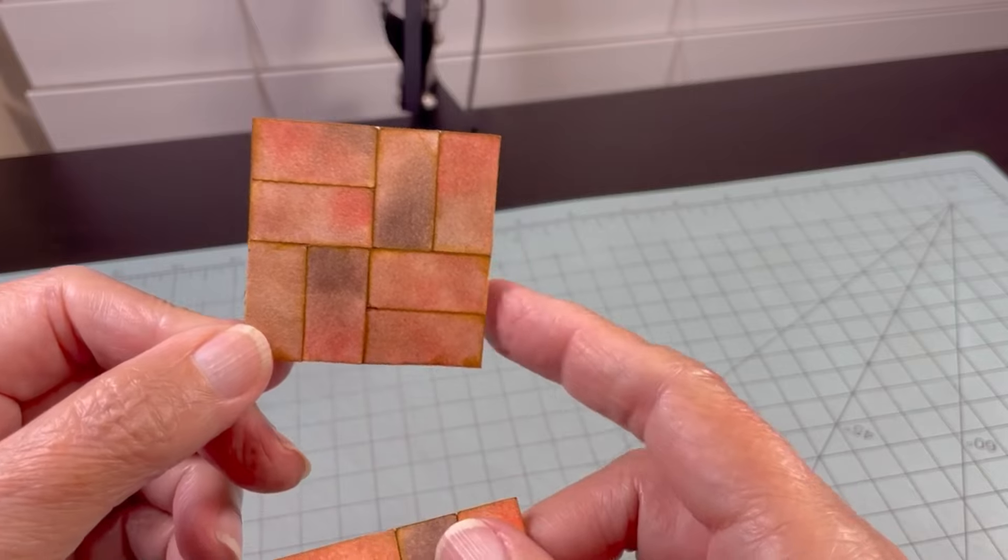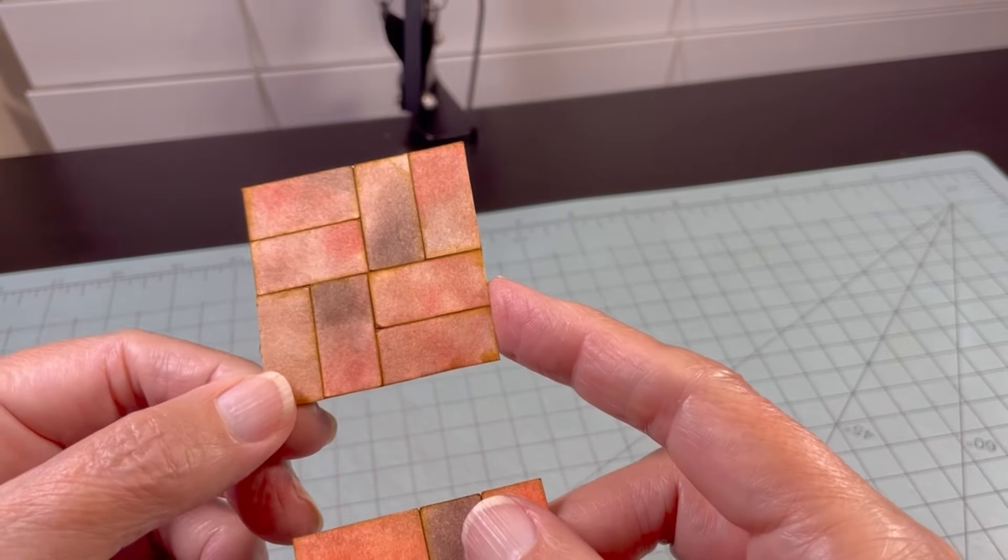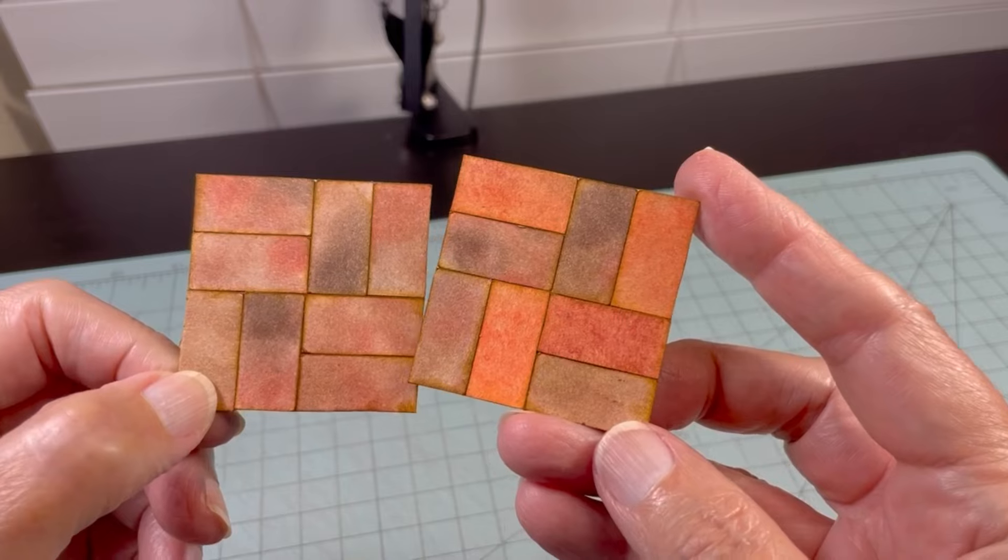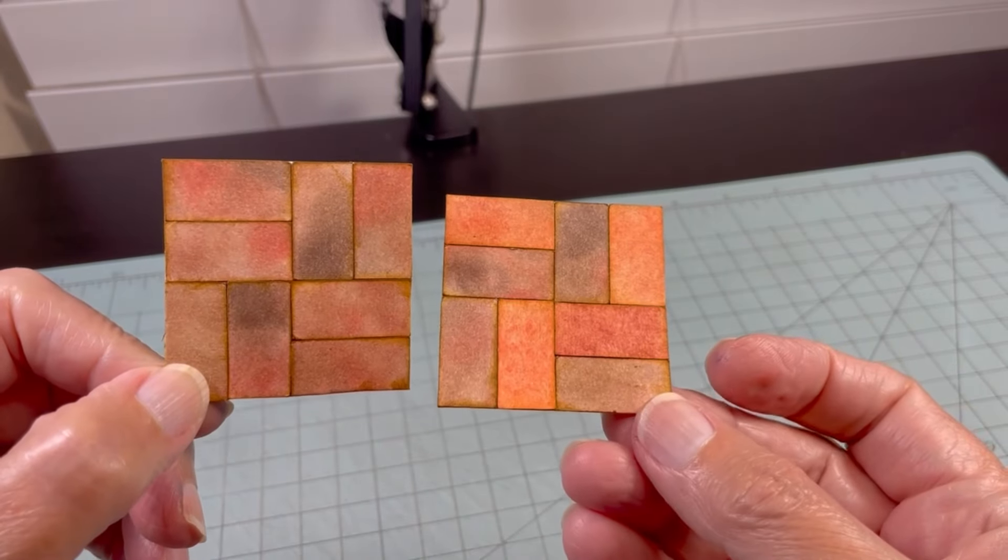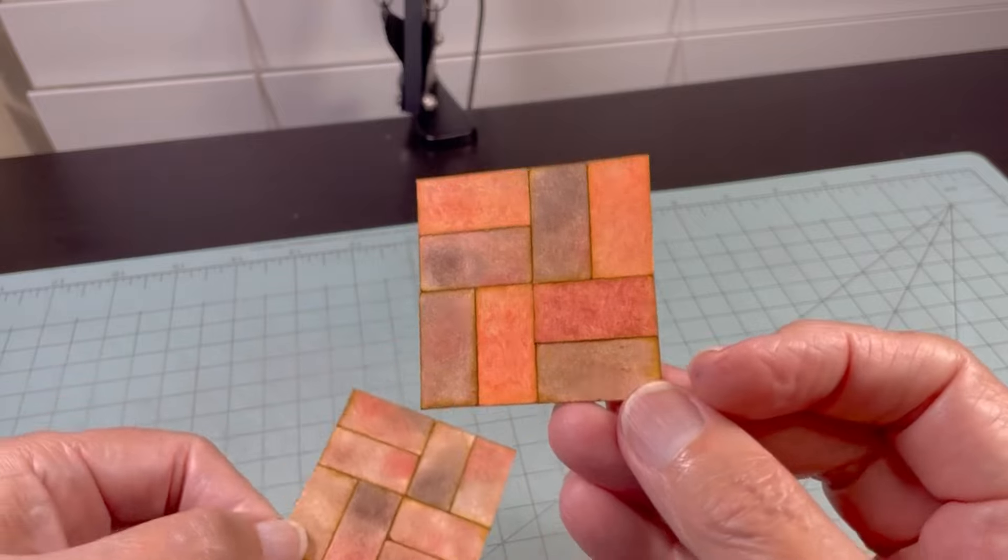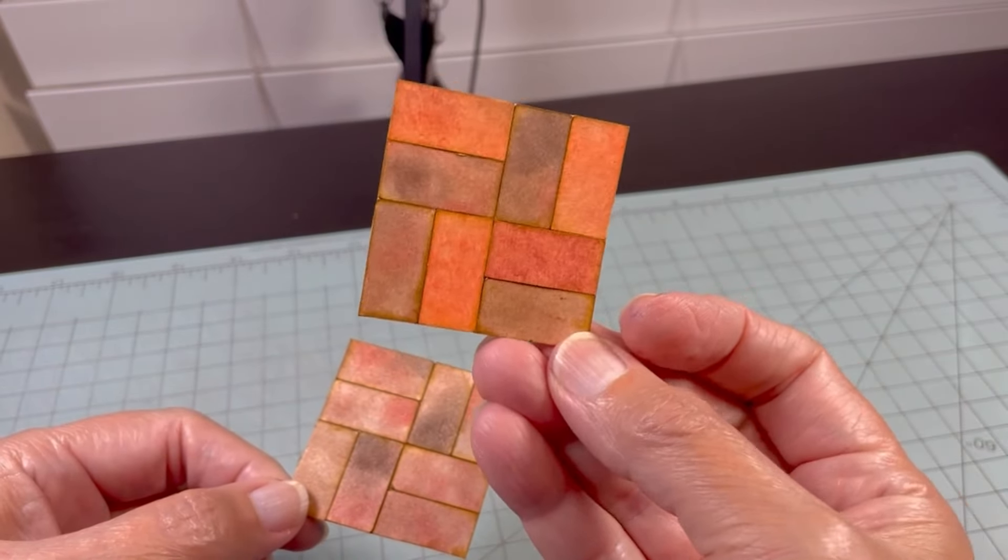And this one was all of the browns, the different shades of browns. And then this is the one where I mixed the brown and the orange, the terracotta colors together, which I really like. It's not showing up like it is in real life, but I really do like that one.